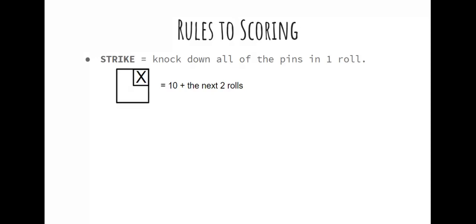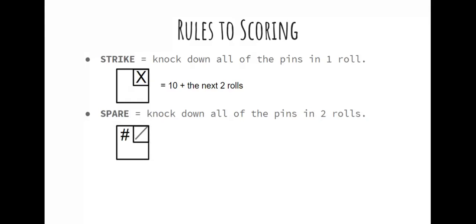A spare is equal to knocking down all of the pins in two rolls. A spare is marked with whatever number you got on your first roll in the upper left hand corner — that could be any number from zero to nine — then in the right hand box it's marked with a slash to show you got the rest of the pins down. A spare is equal to 10 plus just the next roll — not quite as good as a strike, but still better than just adding up the numbers.